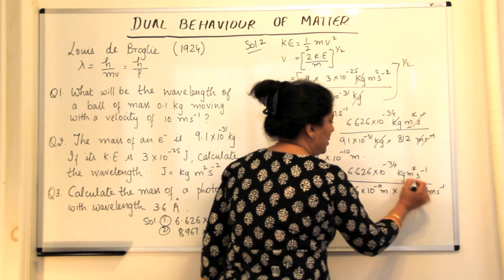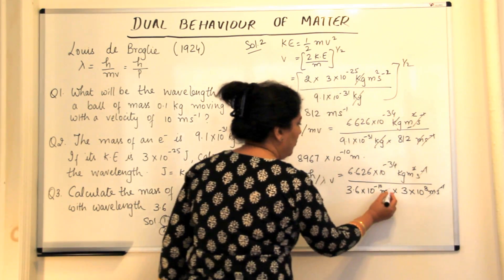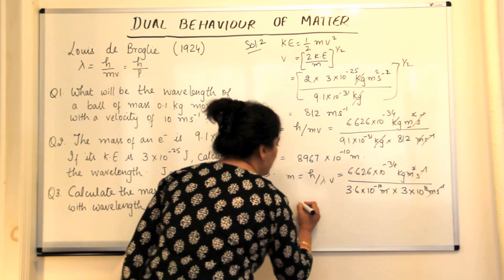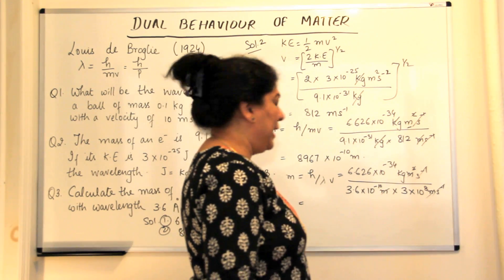3 into 10 to the power 8 meters per second. So the meter, 1 meter goes here, 1 meter a second, second goes here, 1 meter and 1 meter. And the mass would be in kgs. And when you calculate this,